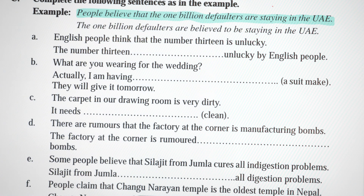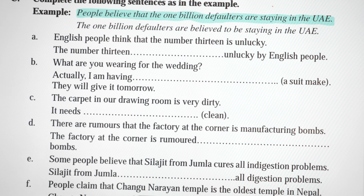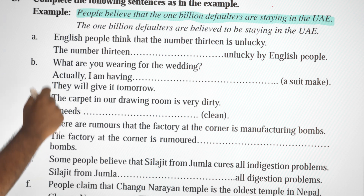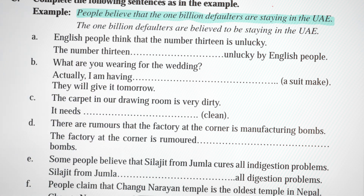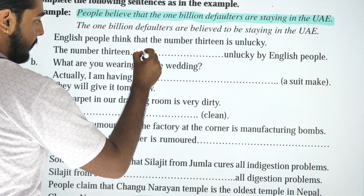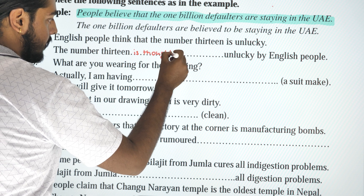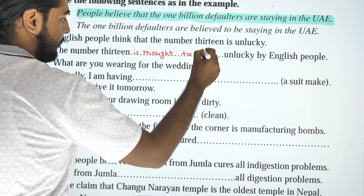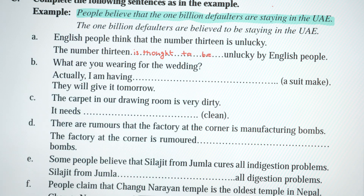Sentence: 'English people think that the number 13 is unlucky.' Passive: 'The number 13 is thought to be unlucky by English people.'